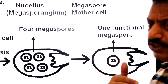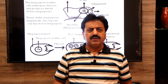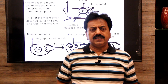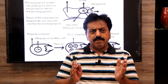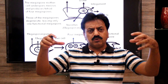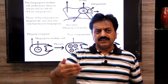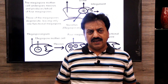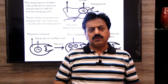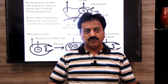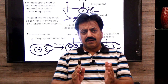You may ask why four megaspores develop but three degenerate. Three degenerate so that one functional megaspore remains, ensuring a healthy female gametophyte is produced. This ensures the survival of the embryo by storing more food in the single functional megaspore.